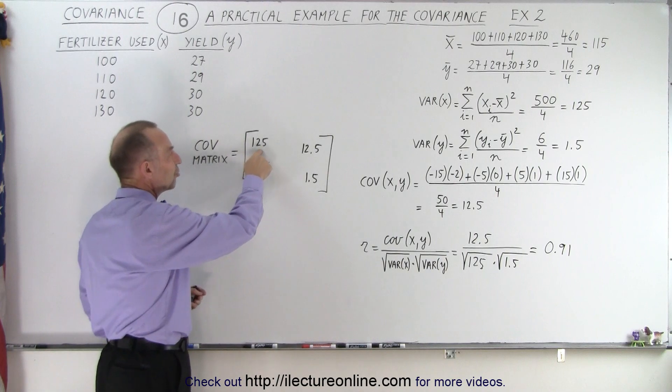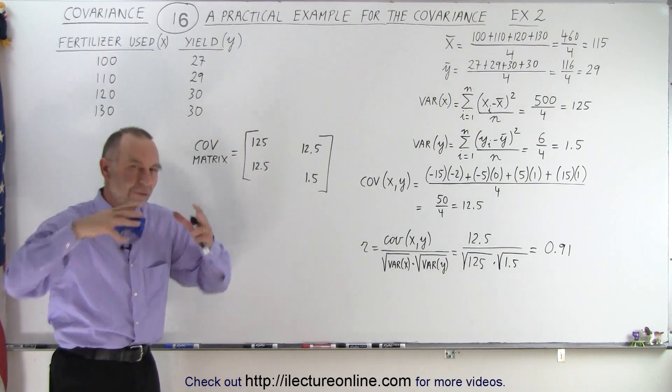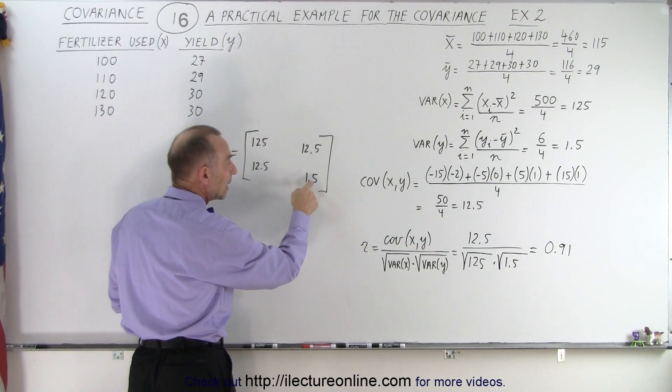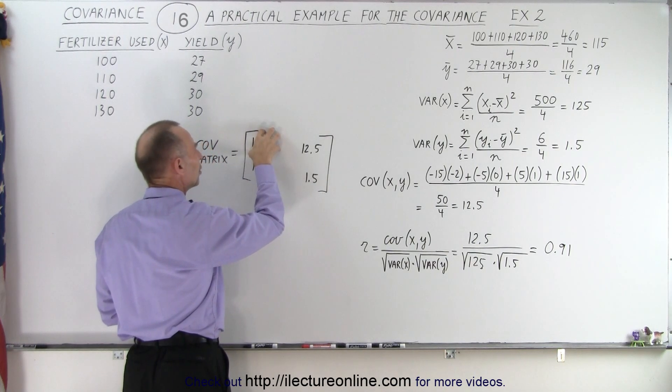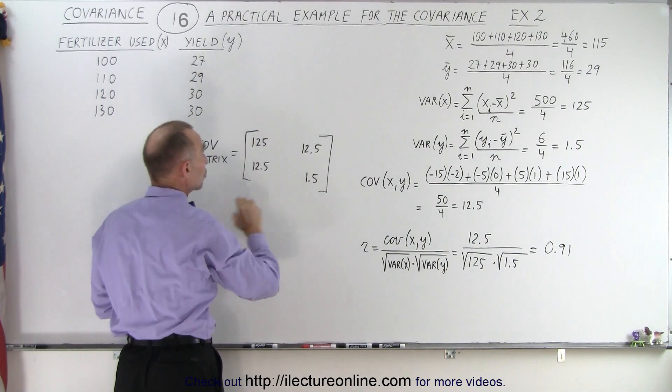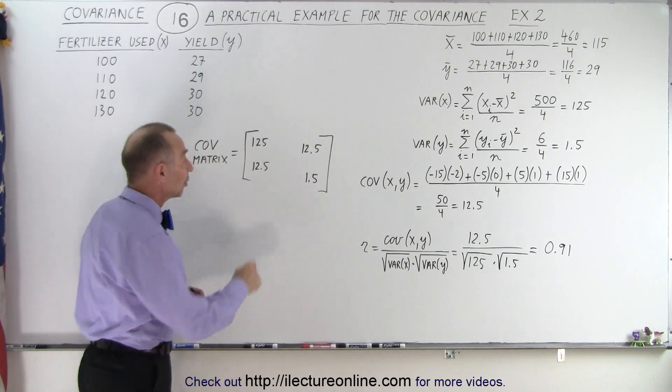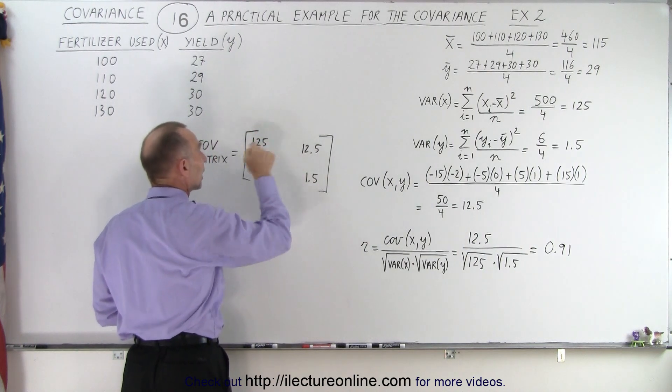A large variation in X, meaning a large change in the amount of fertilizer used, results in a very small variance in the yield, 1.5. So lots of change in the fertilizer used means a very small amount of change in the yield. And you can see that the covariance elements are fairly small relative to the variance in X.